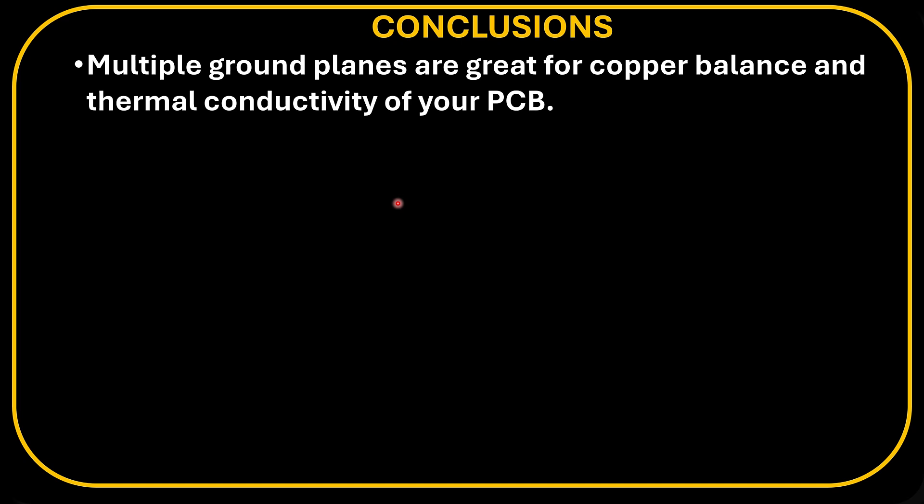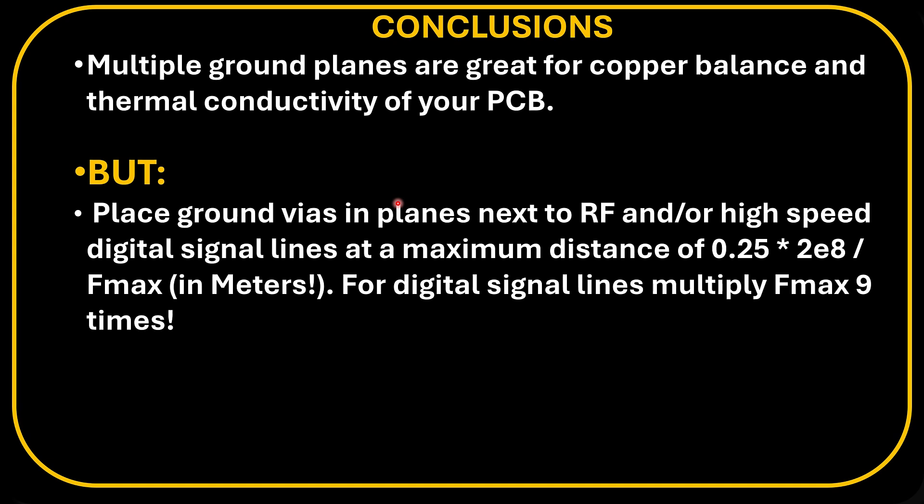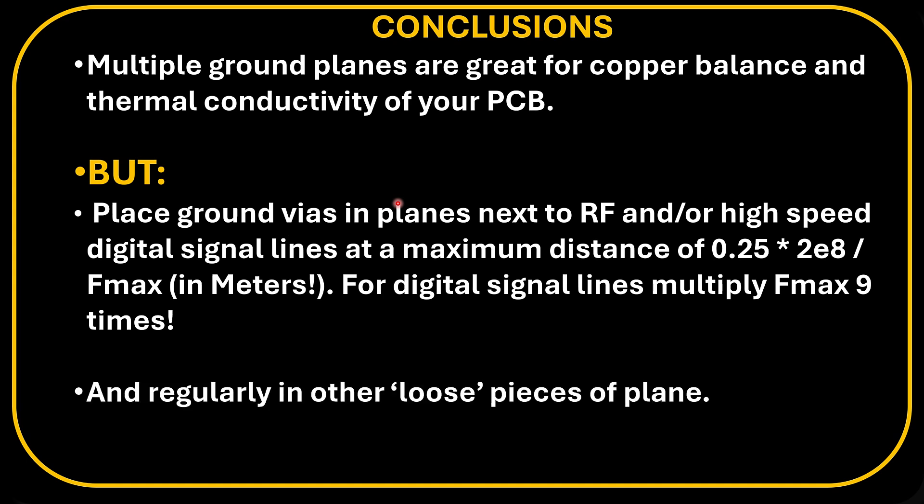Now we're ready to draw some conclusions. Multiple ground planes are great for copper balance and thermal conductivity of your PCB. But place ground vias in planes next to RF and/or high-speed digital signal lines at a maximum distance of 0.25 times 200,000 meters per second divided by the maximum frequency — and that result is in meters. For digital signal lines, multiply the frequency by nine. In other places where you have loose ground, just place regular vias. If you want to be absolutely certain, use this maximum via distance everywhere throughout your board.